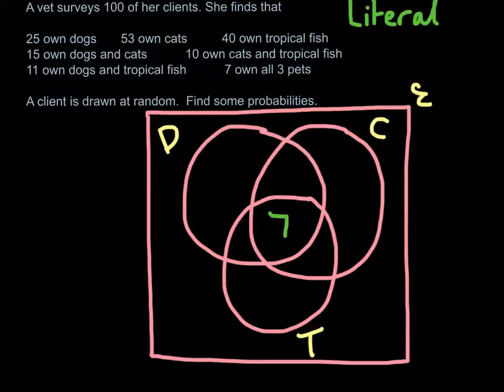So if we know seven people own all three pets, then we can stick a seven in that middle bit. And just cross that out, because we've used that bit of information. Really, these kind of questions, I'm going to treat them like a puzzle, really.